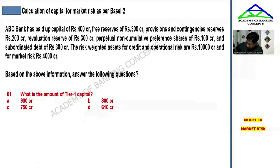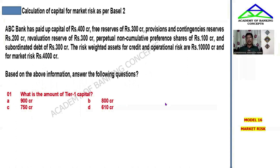Now we are going to the next problem called market risk. The problem involves calculation of capital for market risk. KBC Bank has paid-up capital of 400 crores, free reserves of 300 crores, provisions and contingencies reserves of 200 crores, revaluation reserves of 300 crores, perpetual non-cumulative preference shares of 100 crores, and subordinated debt of 300 crores. The risk-weighted assets for credit and operational risk is 10,000 and for market risk is 4,000.